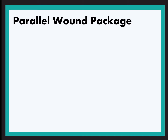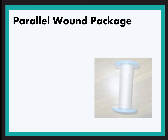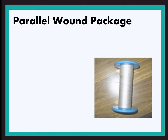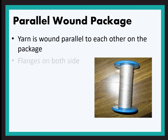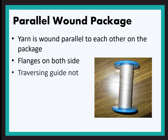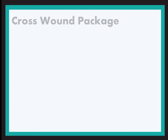Now let us talk about the packages that are produced. Parallel wound packages: in precision winding, parallel wound packages are produced where the yarns are parallelly laid. A flanged bobbin is required as you can see in the image, and here a traversing guide is not required.